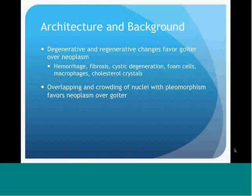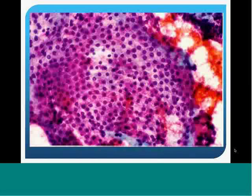Different degenerative and regenerative changes will favor nodular goiter over neoplasm. Hemorrhage—signified by hemosiderin macrophages and cystic degeneration—and areas of fibrosis on ultrasound indicate longstanding nodules rather than rapidly growing neoplasms. Overlapping and crowding of the nuclei, as well as nuclear pleomorphism—meaning a range in size and shape—will favor a neoplasm over a goiter. Here is a pictograph of round, regular sheets of follicular cells.